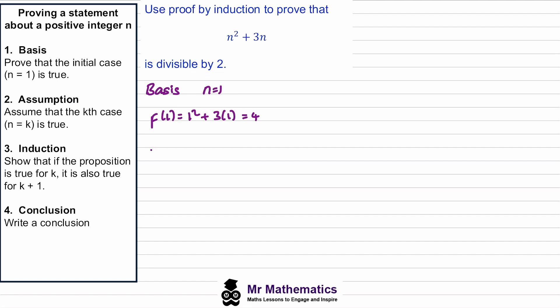Now for our assumption, this is where n equals k. We substitute k into our function, so f of k equals k squared plus three k. And our assumption is that this is divisible by two.